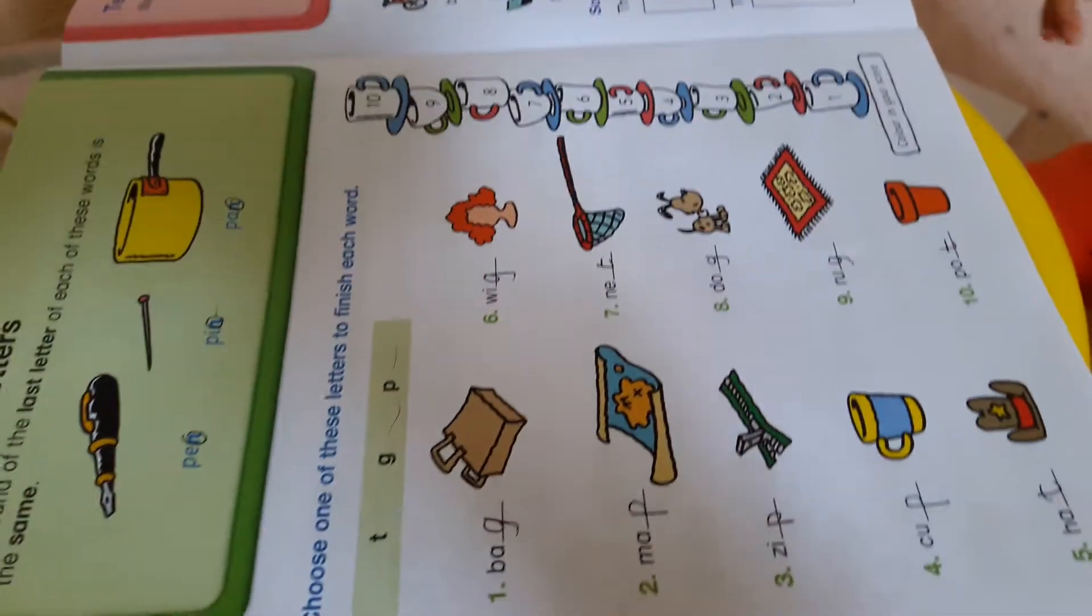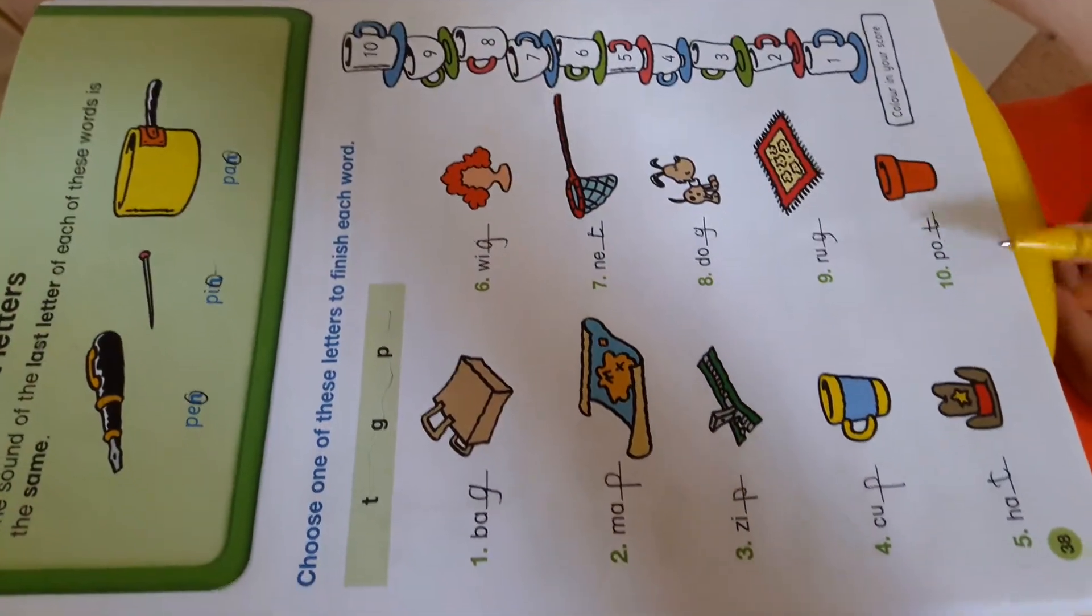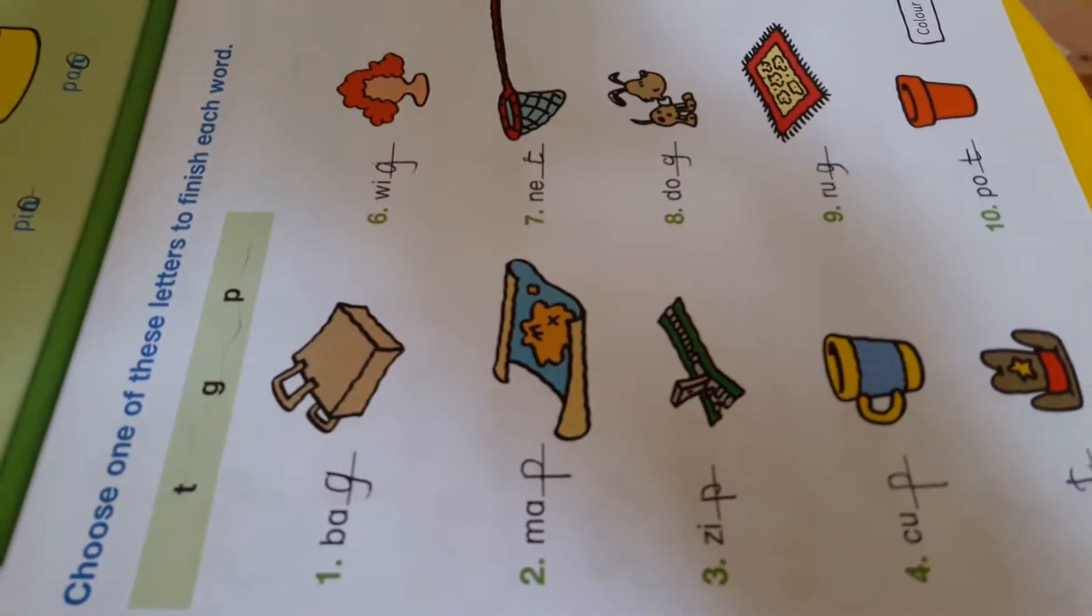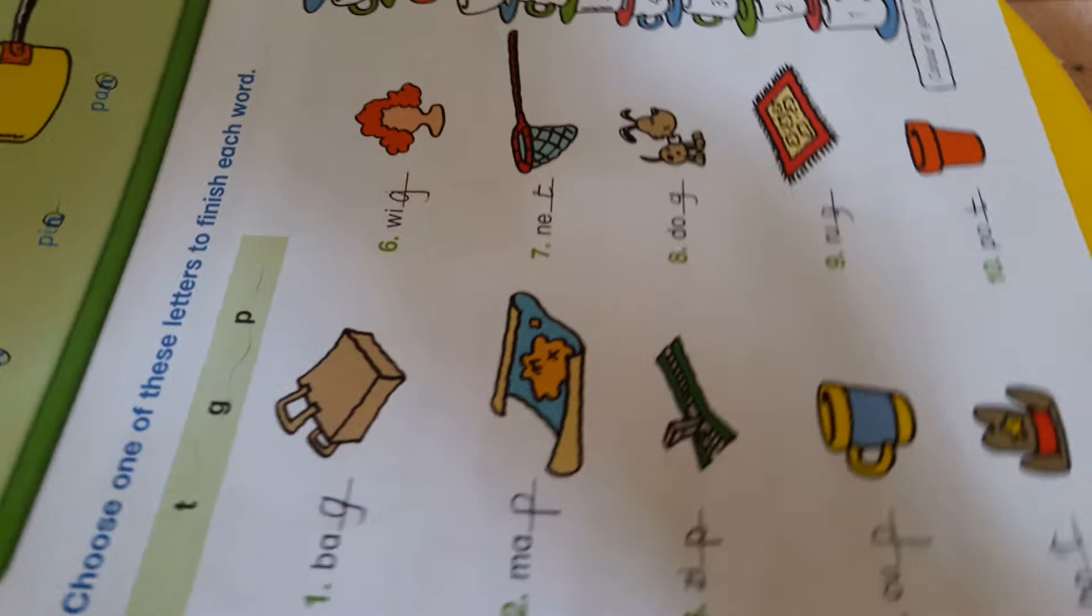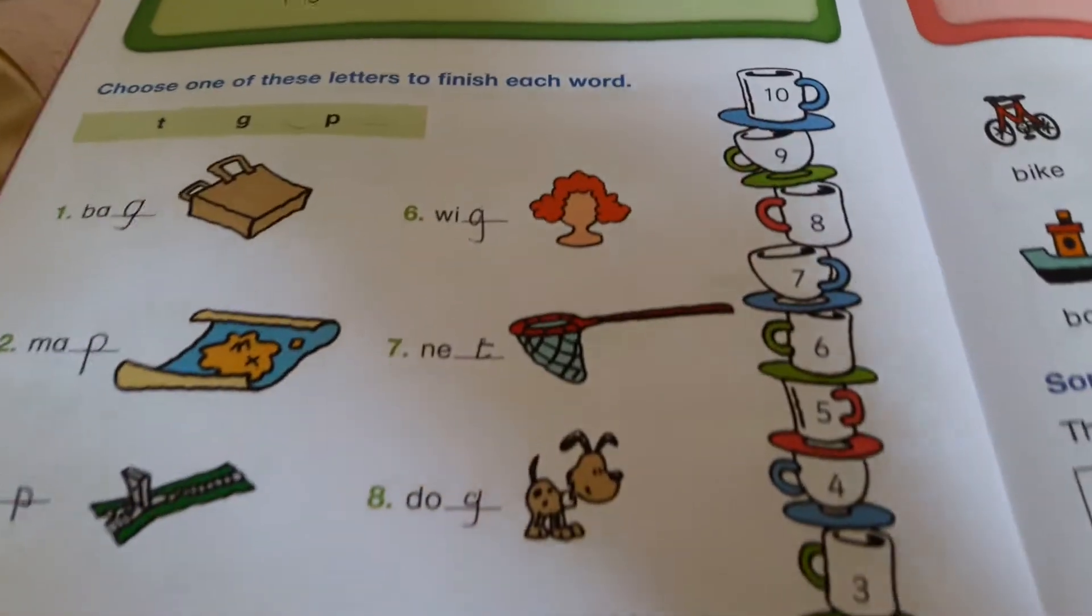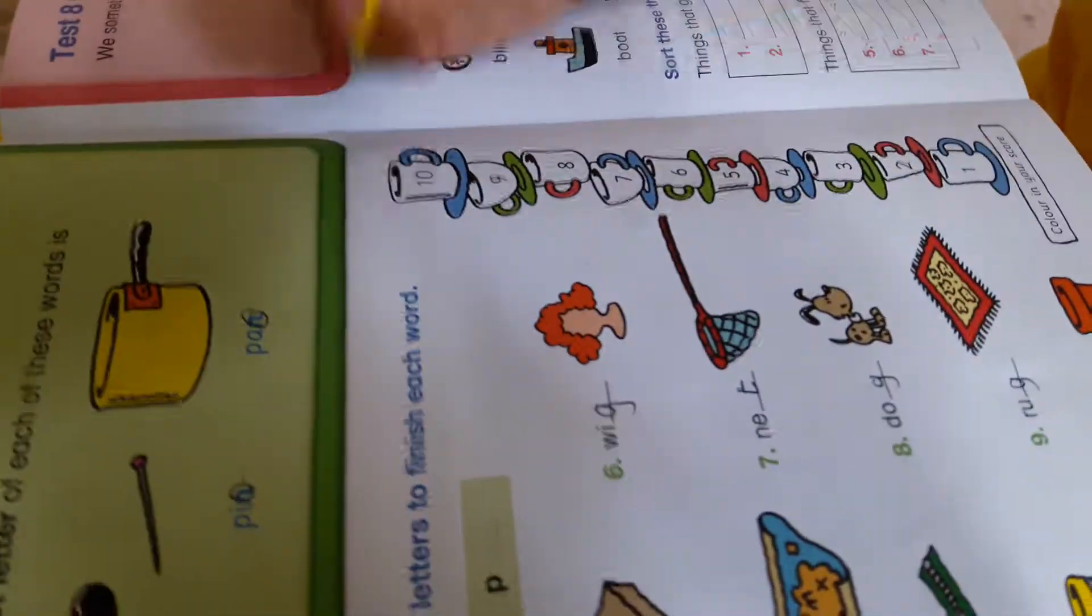So let's color in my score, but we need to do something first. Can you test my score, please? Yeah, that's all right. Your score is 10 out of 10. Thank you. Brilliant.